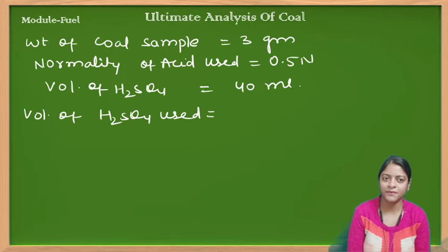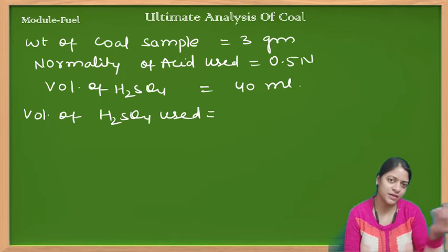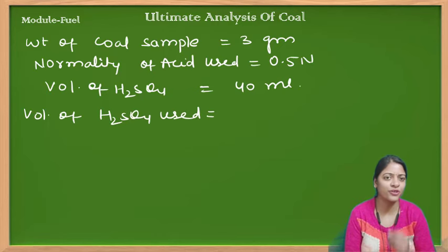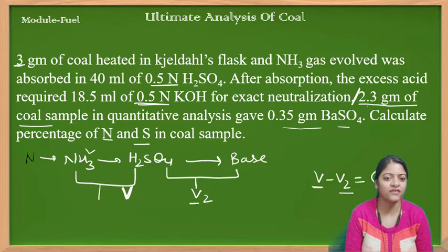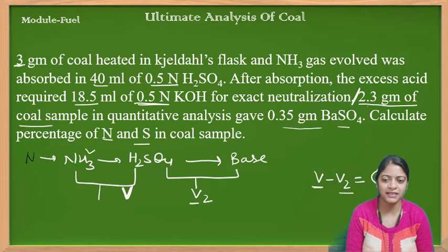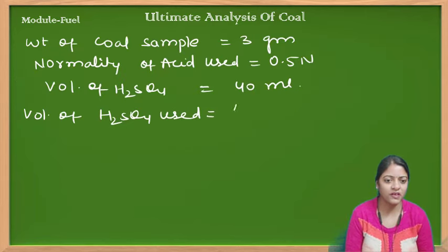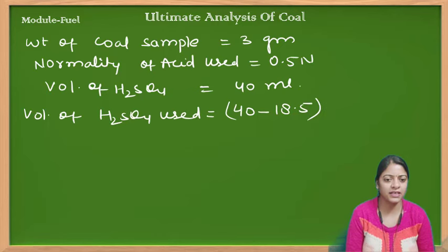एक तरफ acid, एक तरफ base। Acid का volume कितना लगा, यह मुझे नहीं पता। Normality पता है, और base की normality और volume दोनों पता है, तो वहाँ से मैं volume निकाल सकती हूँ। दूसरा तरीका — दोनों की normality same है, 0.5 N और 0.5 N। तो मैं directly 40 में से 18.5 ml minus कर दूँ, तो भी volume of acid जो ammonia के साथ use हुआ वो निकल आएगा। That will be 40 minus 18.5, which equals 21.5 ml।